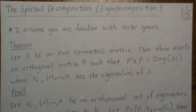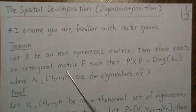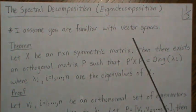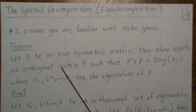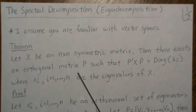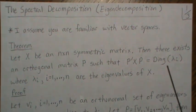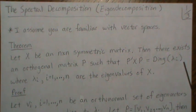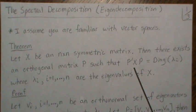In this video we're going to look at the spectral decomposition, sometimes called the eigendecomposition, of a symmetric matrix. I'm going to assume you're familiar with vector spaces. The theorem is: X is an n by n symmetric matrix, then there exists an orthogonal matrix P such that P^T X P is a diagonal matrix where the diagonal elements are the eigenvalues of X.